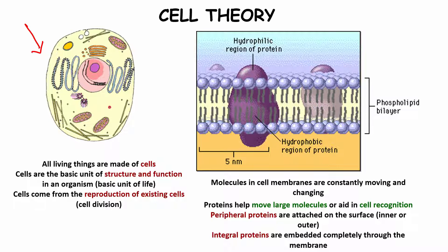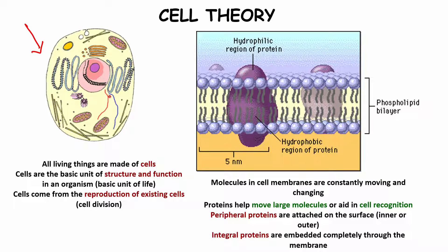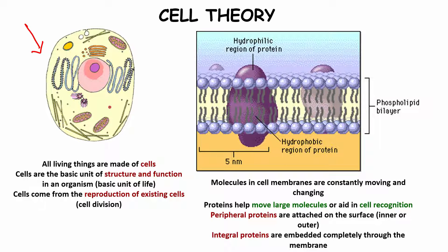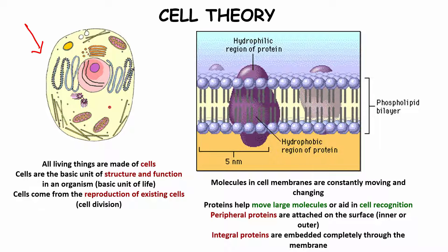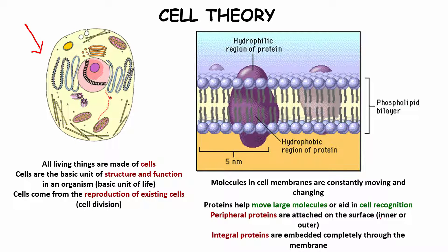Within the cell, there are hydrophobic and hydrophilic regions of protein, and a phospholipid bilayer. Molecules in the cell membrane are constantly moving and changing. Those proteins also help move larger molecules or aid in cell recognition. Proteins are divided into two types: peripheral proteins, which are attached on the inner or outer surface, and integral proteins, which are embedded completely through the membrane.